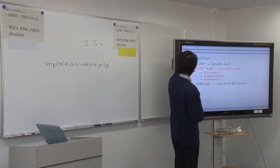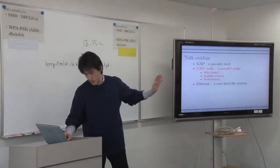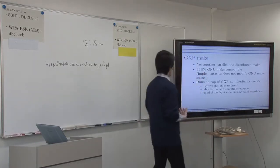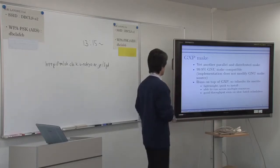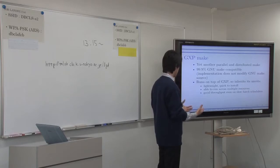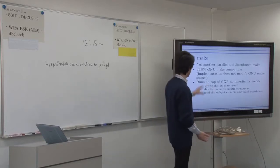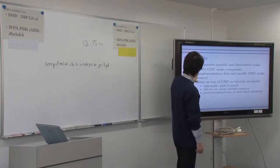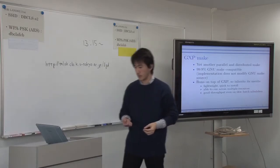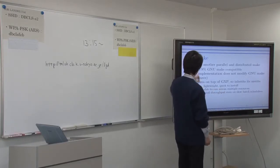After quickly overviewing GXP, what comes next is GXP Make. It is yet another parallel or distributed Make, but it tends to be almost completely linearly compatible with regular Make, so you can move from a single node parallel Make system to distributed systems. In fact, the implementation does not modify GNU Make at all — you can just use the GNU Make already on your system.